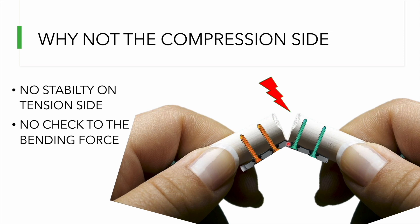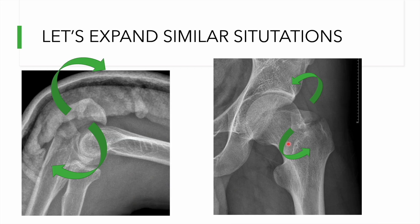There is no check on the bending force, unlike the previous scenario where compression-side contact prevented further bending of the device. This principle also applies to other regions where a rotatory force results in a vector directed away from the fracture on the outer surface and toward the fracture on the inner surface.